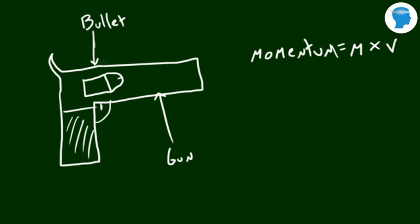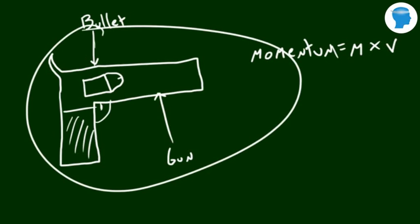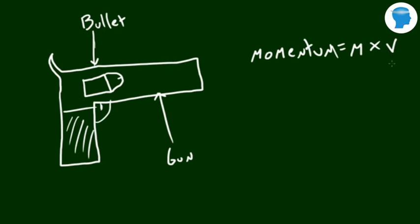because the velocity of this entire system is zero, because obviously it's not moving. You're not doing a drive-by or anything. So, since the velocity is zero, no matter what the mass is, the momentum has to be zero, too. So, just remember that the total momentum of the system is zero before the event.